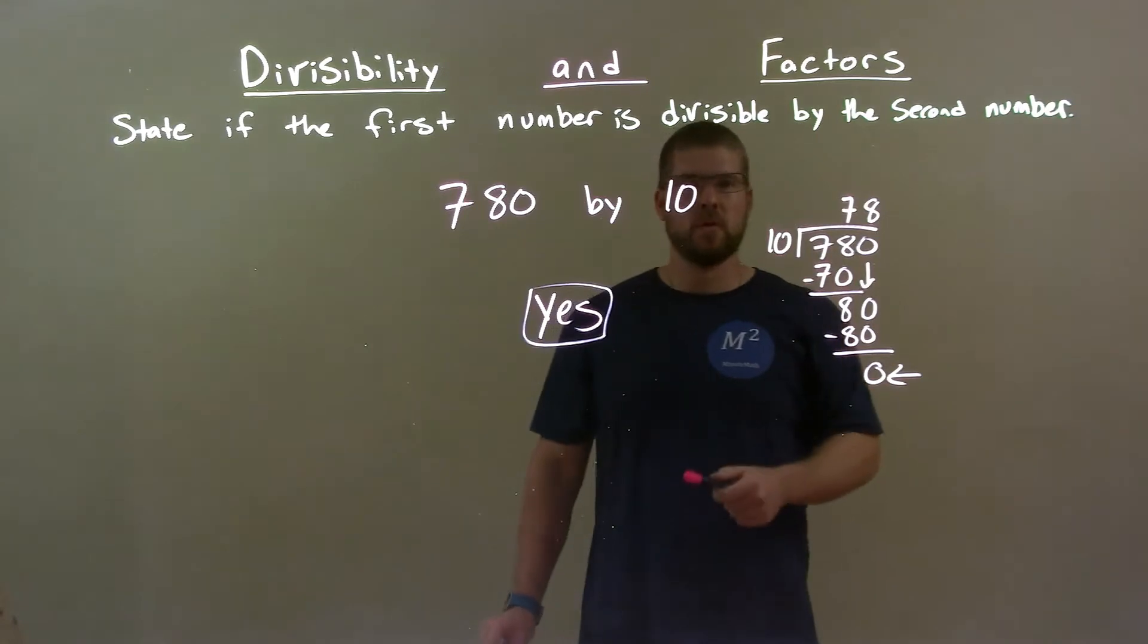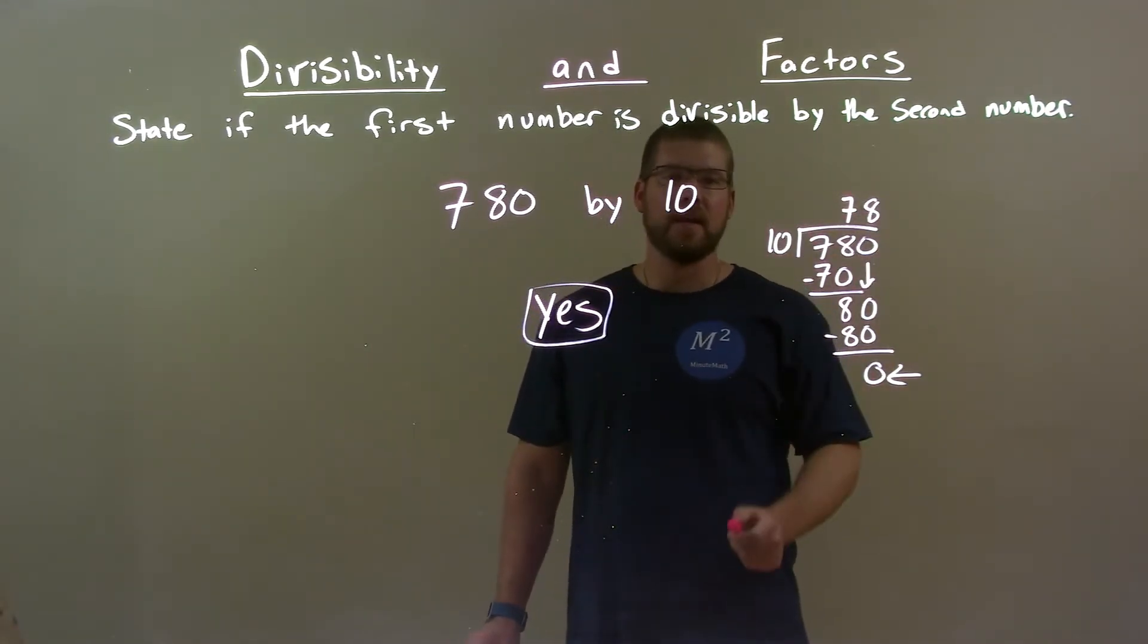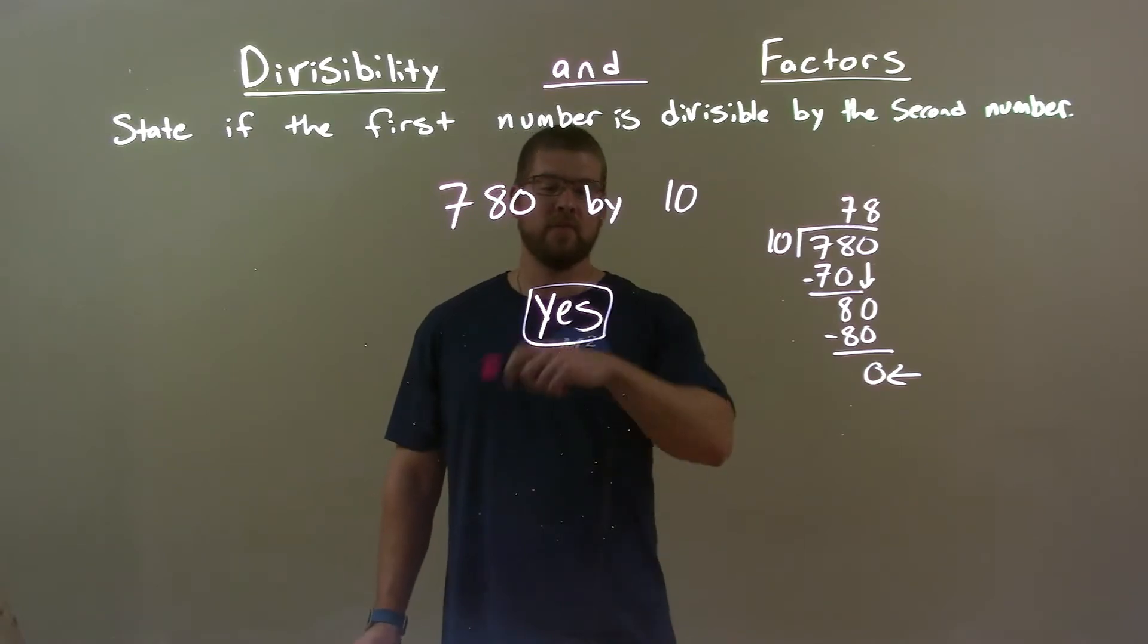We also confirm that by doing long division. 10 into 780 went in evenly 78 times with a remainder of 0. So again, goes in evenly. Remainder 0 is the kicker there. So again, final answer is yes.